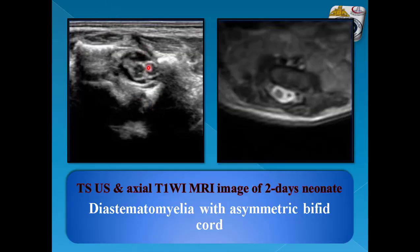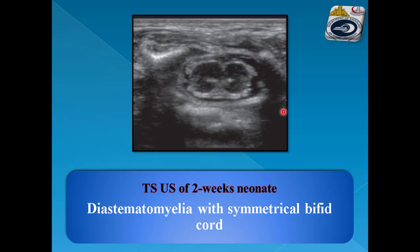On this TS ultrasound image there are two spinal cords divided — asymmetrical division where one is larger than the other. This is confirmed by the axial T1-weighted MRI image. Another example shows symmetrical division of the spinal cord into two cords, denoting diastematomyelia.